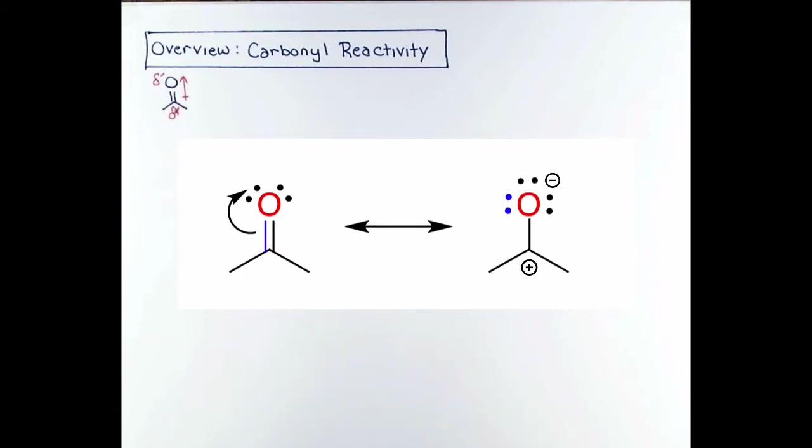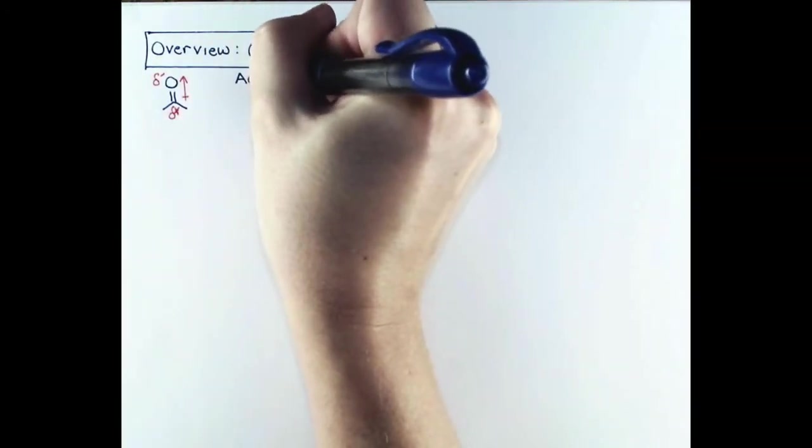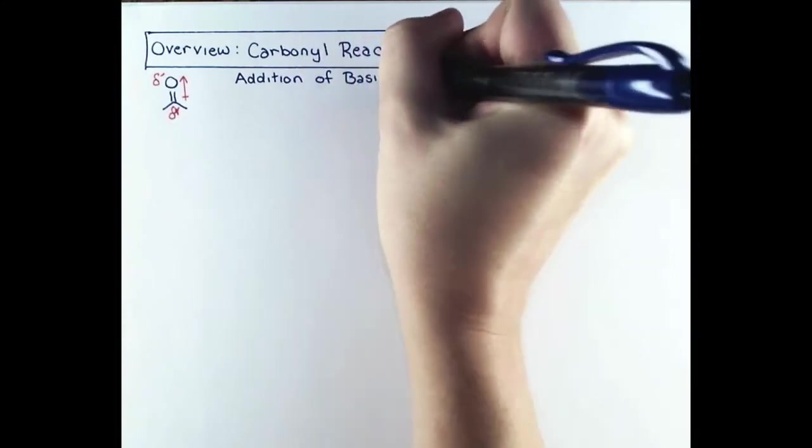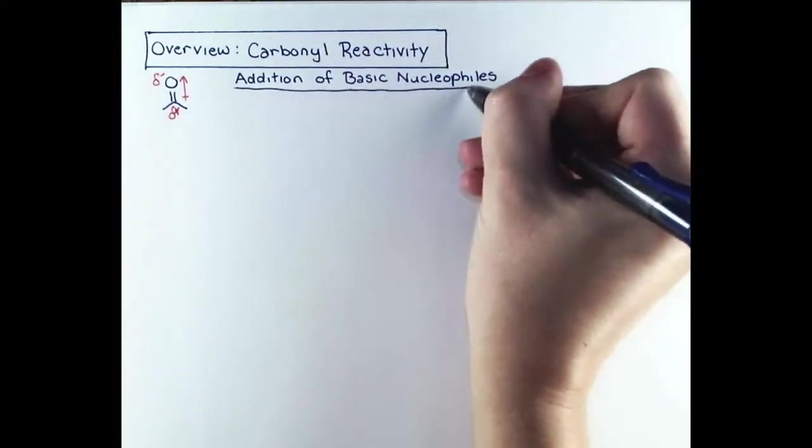This contributes significantly to the carbonyl group's reactivity. So when an electron-rich atom bonds to a carbonyl, it's going to do so at the delta-positive carbon atom.